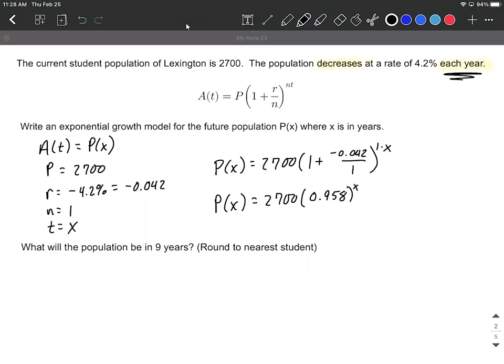The follow-up question, we're asked, what will this population be in nine years? And we're going to round to the nearest student. In this case, that's just giving us a value for X, our number of years.